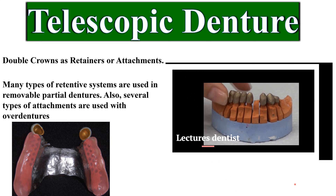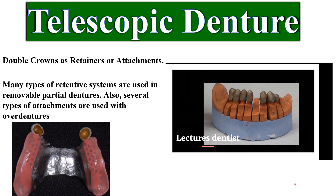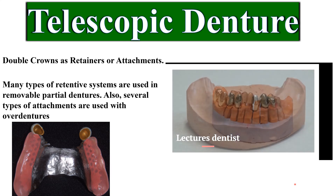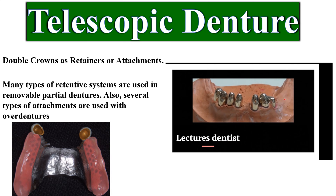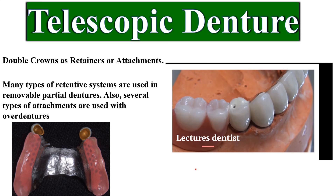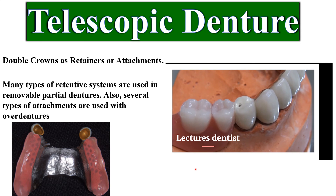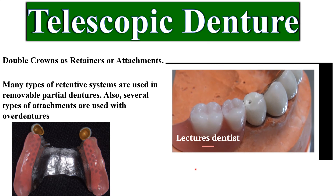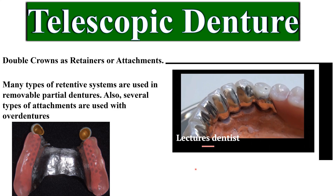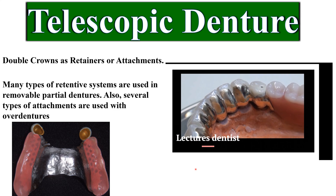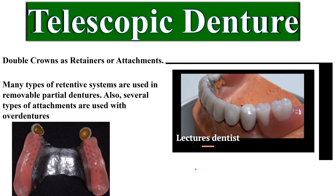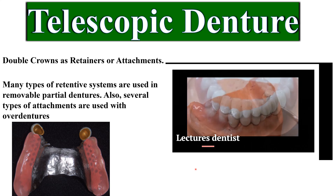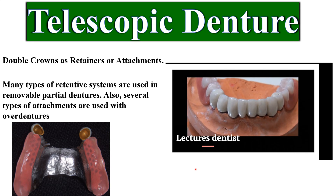The telescopic denture refers to the type of prosthesis that includes double crowns as retainers or attachments. These retainers or attachments consist of two crowns: the primary or inner crown, which is cemented to the abutment, and the secondary or outer crown, which is attached to the denture. The double crown system, often known as telescopic attachments, can be employed as attachments for overdentures or retainers for partial dentures.